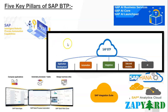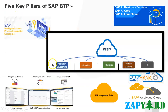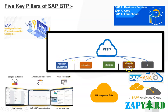SAP BTP services and solutions can be majorly categorized into five key pillars: application development, automation, integration, data analytics, and AI. In short form, we can say A-A-I-D-A, or AIDA. Now let us understand in brief about each of these five different pillars.